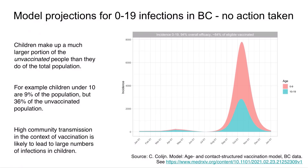I want to highlight what's happening with children. Children make up a much larger portion of the unvaccinated population than the total population — children under 10 are about nine percent of the population, but they represent 36 percent of the unvaccinated population. That won't change until vaccines are approved for kids under 12 and those children have completed two-dose vaccination. In the meantime, we're looking at a September–October–November wave that will include those unvaccinated children, with quite large case counts in that age cohort.